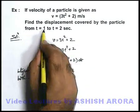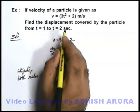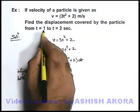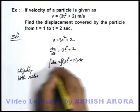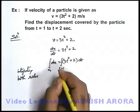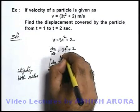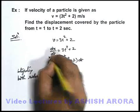Here you can see we are required to find the displacement covered by the particle from t equal to 1 to 2 seconds. Say at t equal to 1 second particle was at a position x₁, and at t equal to 2 seconds particle was at a position x₂.